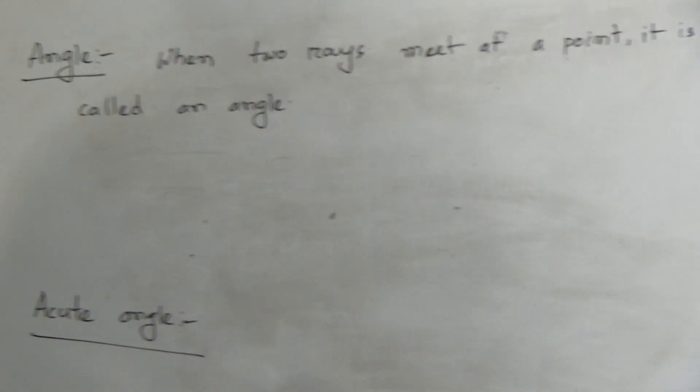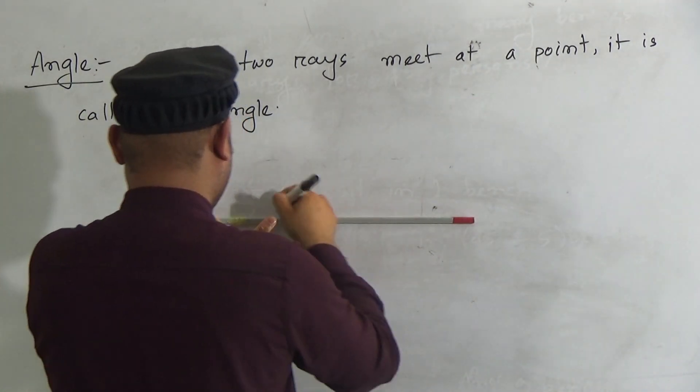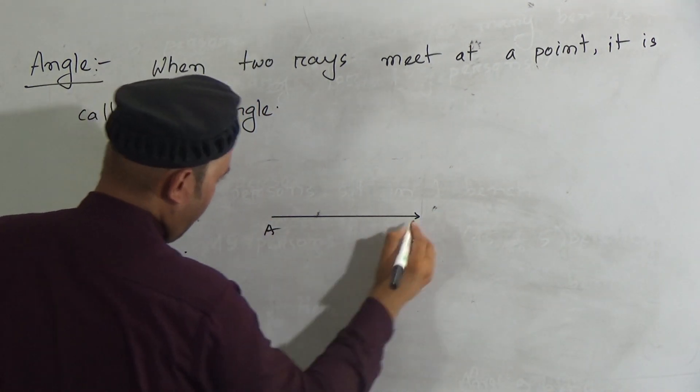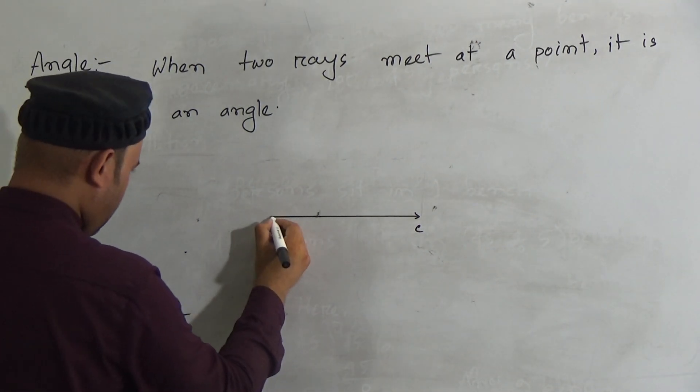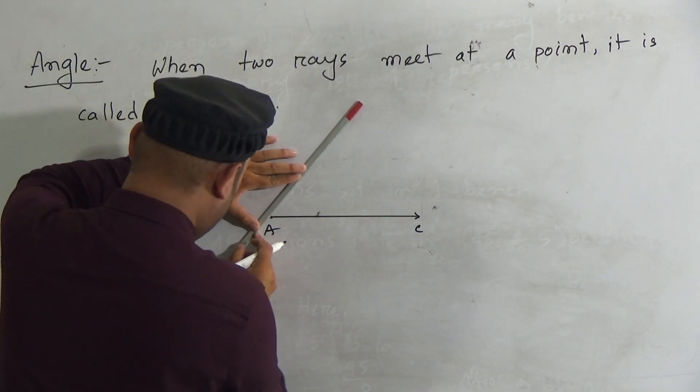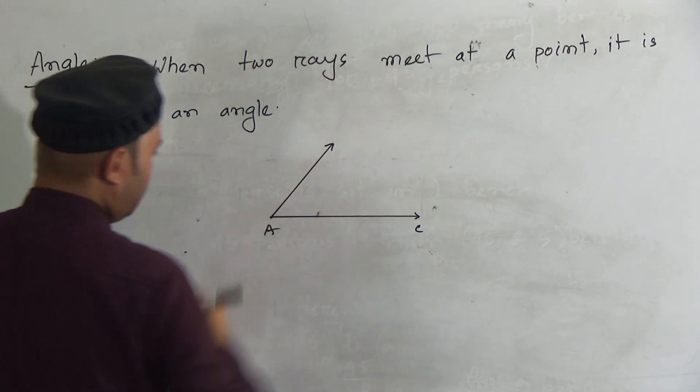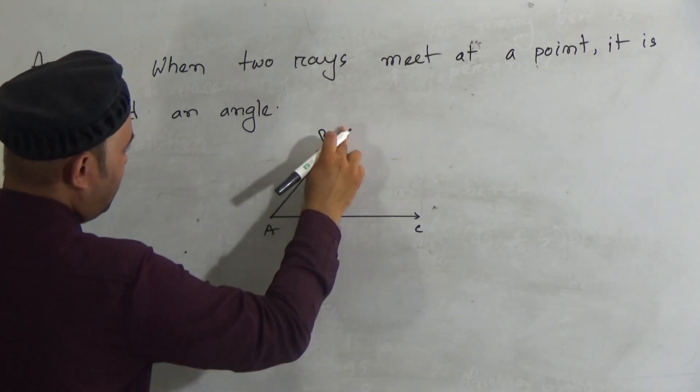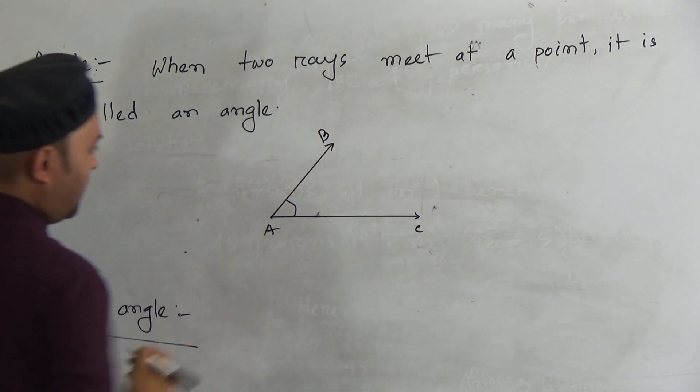Look here my students, here is a ray A and C, and we know that a ray has a point but no definite length. Then draw another ray meet on the same point A, and name it B. Then AB is another ray.